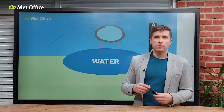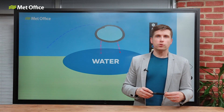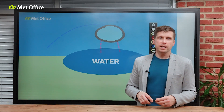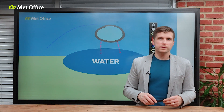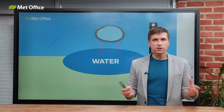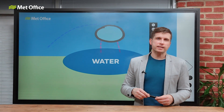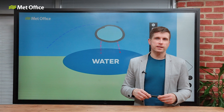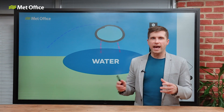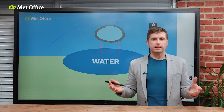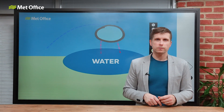Or it can happen when cold fronts or cool air masses move over warm seas. This often occurs in autumn, when sea temperatures are still relatively warm after the summer, but the air is already starting to cool.